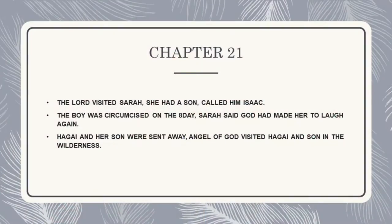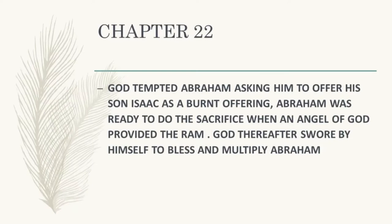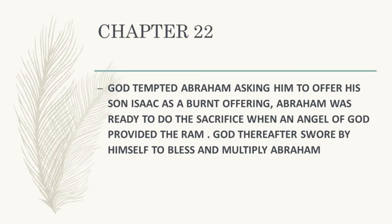In chapter 21, God had said Sarah would have a son. She called his name Isaac because she said, 'God has made me to laugh and made people around me to also laugh with me.' Hagar and her son were sent away, but the angel of God appeared to them in the wilderness and saved them. Chapter 22: God tested Abraham by asking him to sacrifice his only son Isaac. Abraham did not refuse — he was about to obey, and in fact was nearly sacrificing when a ram was given as a replacement. After that, God swore by himself for the first time in the history of man that he would bless Abraham and multiply him.